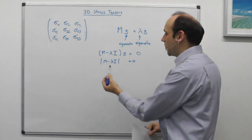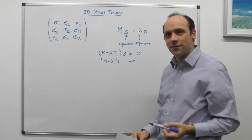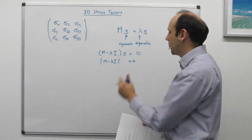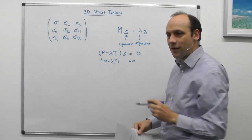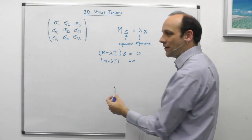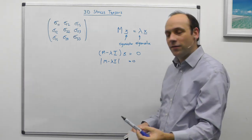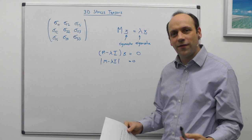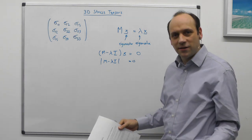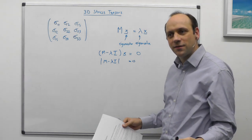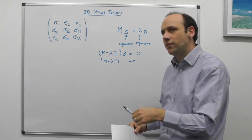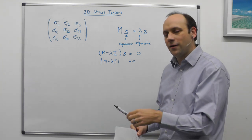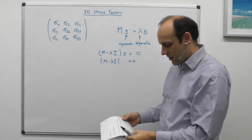Because it's a cubic, there'll be three possible values of lambda and three corresponding eigenvectors. Once we've found the eigenvalues, we plug back into the equation to find each eigenvector by setting up three simultaneous equations. We do that three times — once for each eigenvalue — to find the three eigenvectors.